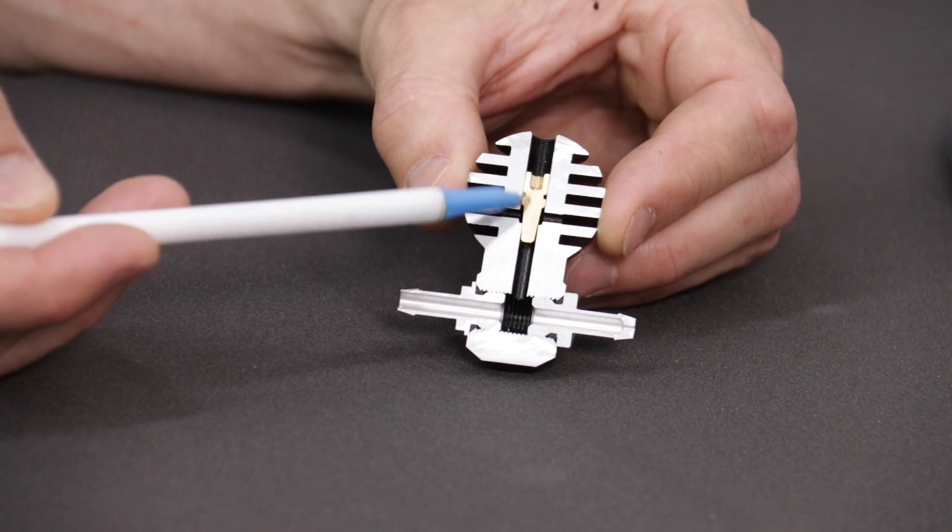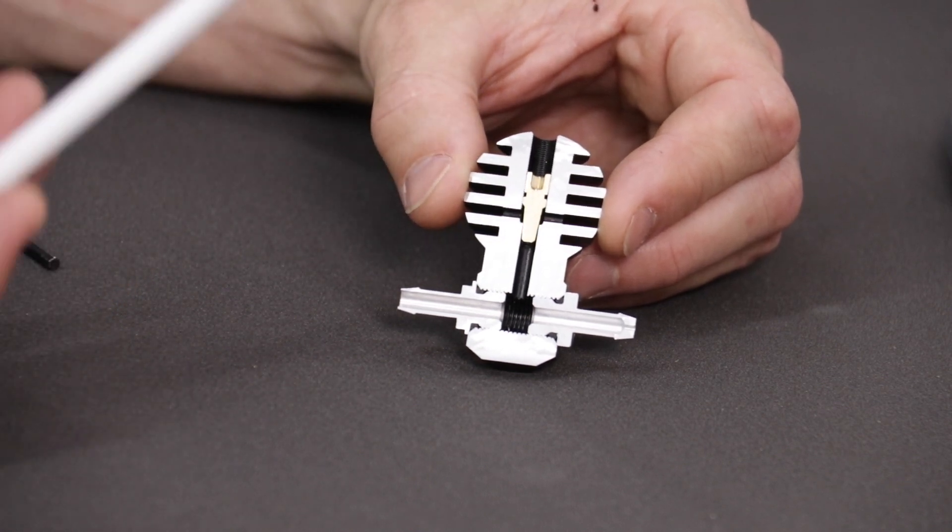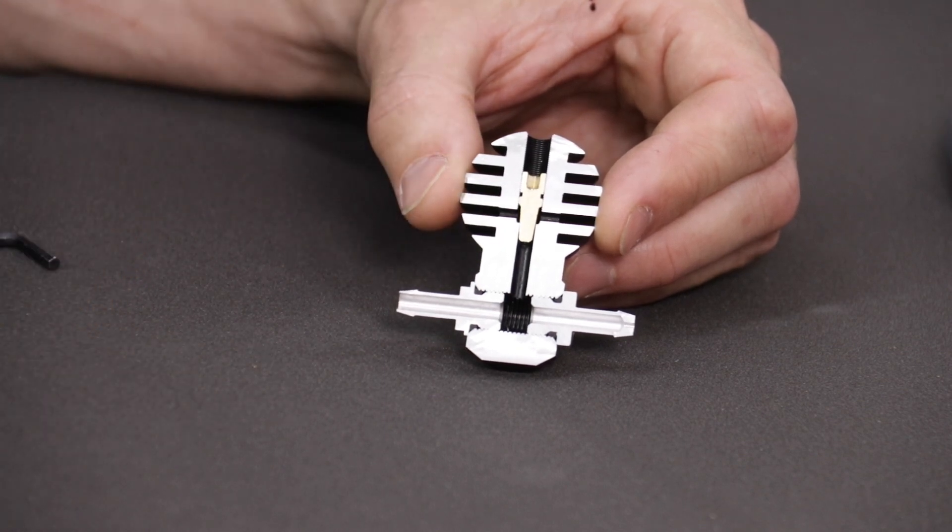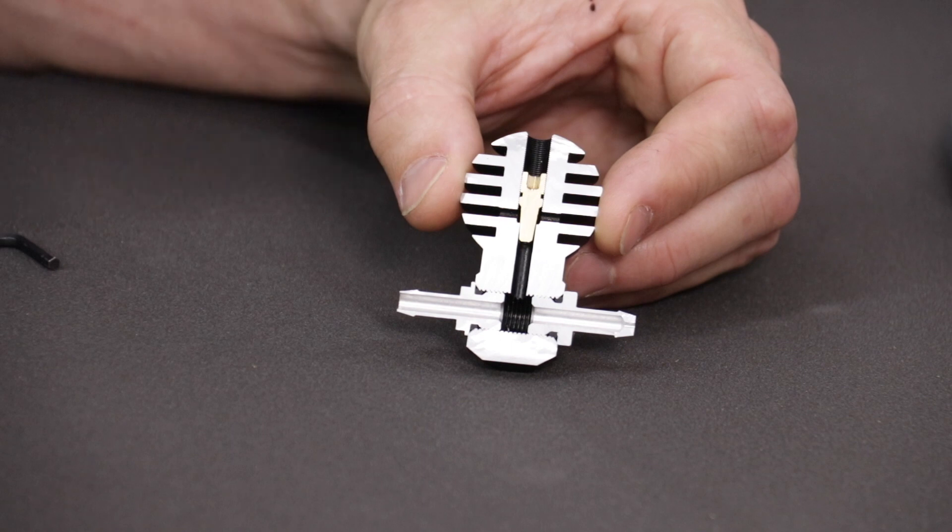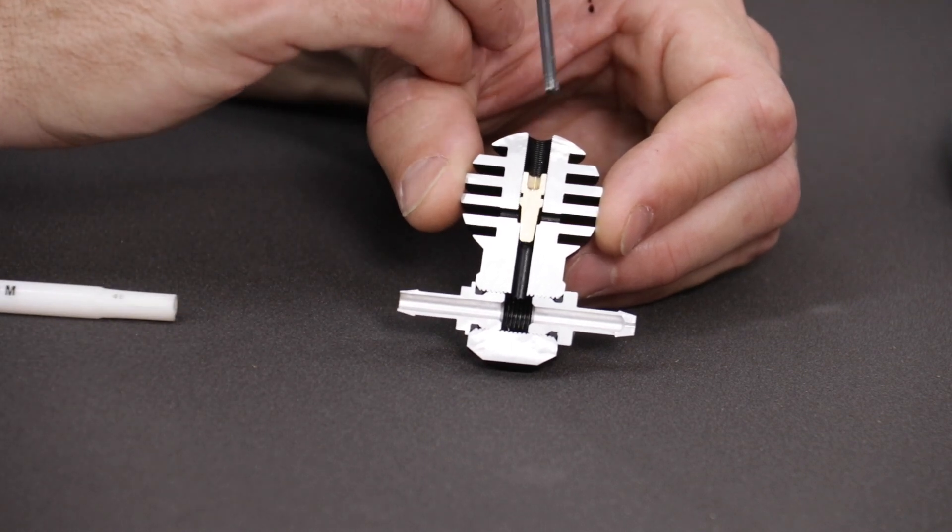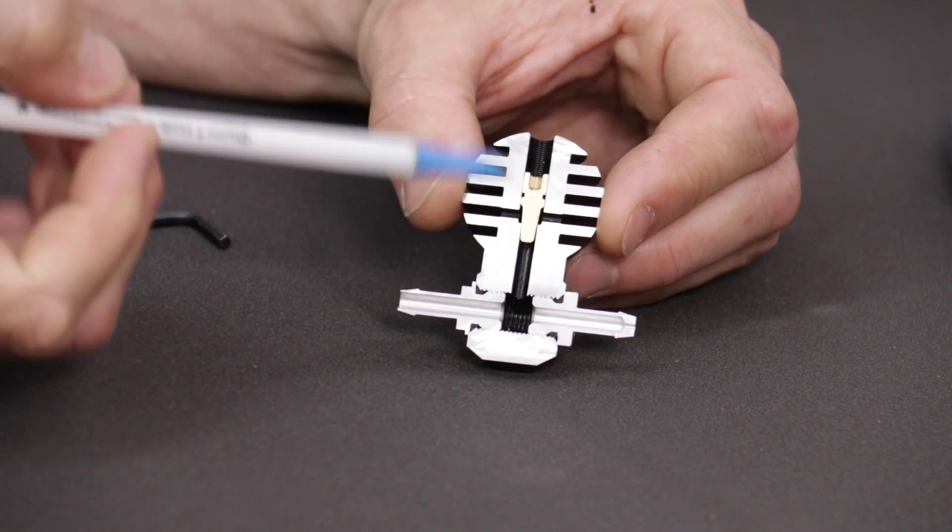Up here we have the adjustment screw which is a tapered needle, it's basically called a needle valve. The reason for the taper is that it makes the adjustments very fine and precise. So as you put your adjustment tool in the top here and you turn this screw, this moves up and down and it opens up this passage here.